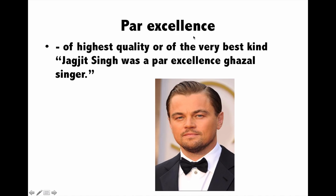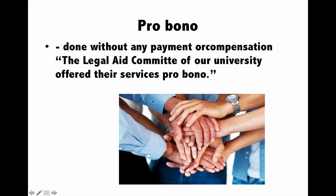Next is 'par excellence', meaning of very high quality or very excellent. For example, Jagjit Singh was a par excellence ghazal singer. Leonardo DiCaprio is an actor par excellence. Next is 'pro bono', meaning when you do something for social good without taking any payment. For example, working for an NGO is pro bono work. If a lawyer fights a case for a poor person without charging him, he is doing pro bono work — done without any payment or compensation.